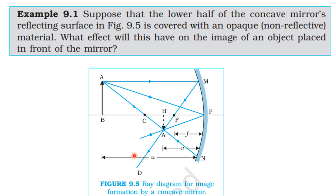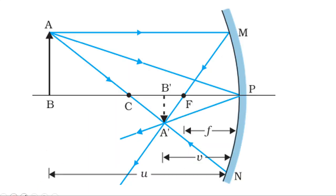Referring to figure 9.5 — this is a complete reflecting surface. An object is placed in front of the mirror, and the image A-B is formed with a certain intensity.